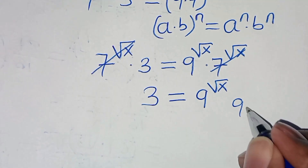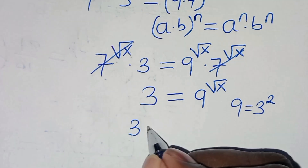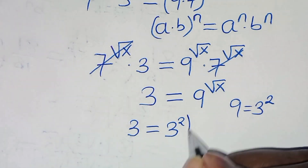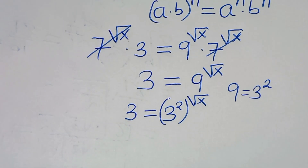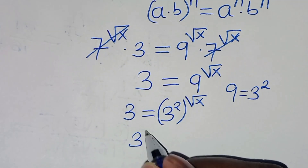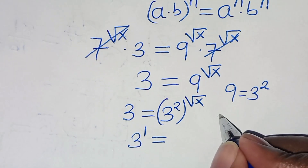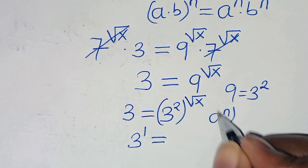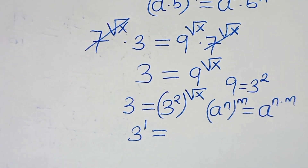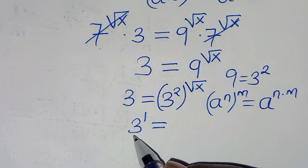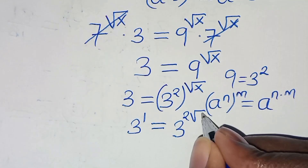We can express 9 as 3 to the power of 2, so we have 3 equal to 3 to the power of 2 raised to the power of square root of x. Then 3, which is 3 to the power of 1, equals 3 to the power of 2 raised to power square root of x. This is in the form of a to the power of n raised to power m, which we can express as a to the power of n times m, giving us 3 to the power of 1 equals 3 to the power of 2 times square root of x.